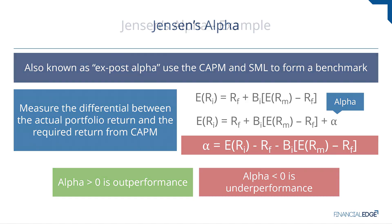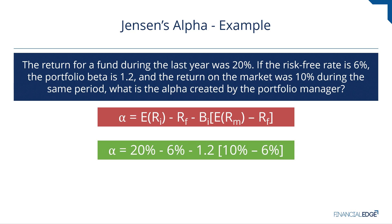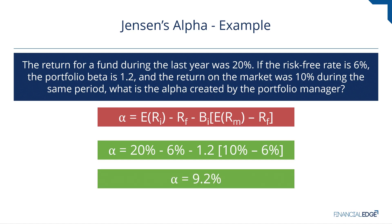Let's go through an example. The return for a fund during the last year was a strong 20%. The risk-free rate was 6%, the portfolio beta was 1.2, and the return on the market was 10% during the same period. Plugging into the alpha formula: 20% minus 6% minus 1.2 times (10% minus 6%) equals 9.2%. It's important to note that the 9.2% alpha is less than the simple difference between the portfolio and market return of 10%, because the portfolio manager took on more risk than the overall market, as indicated by the beta of 1.2.